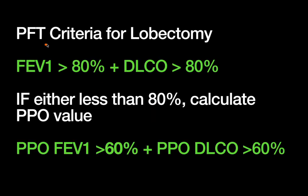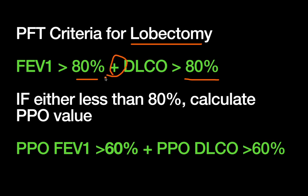The PFT criteria where somebody is considered adequate for lobectomy — removing an entire lobe, which is probably the most common operation when resecting lungs — is if they have an FEV1 greater than 80% and a DLCO greater than 80%. If both of those values are met, they are thought to have enough pulmonary reserve to tolerate a lobectomy.